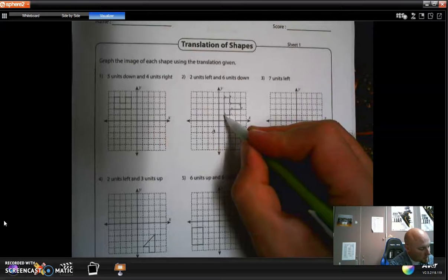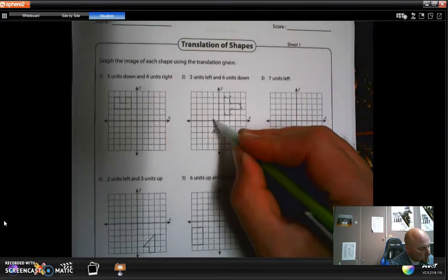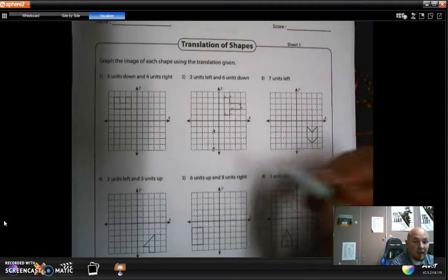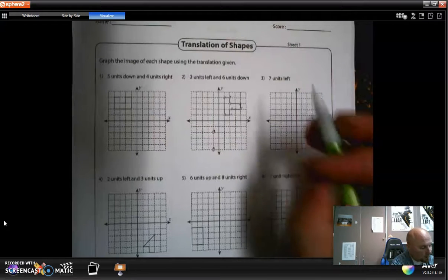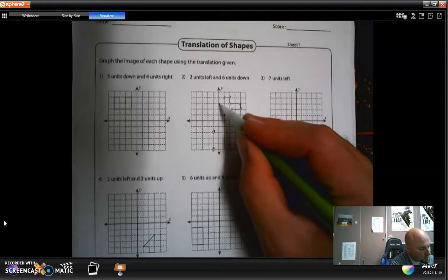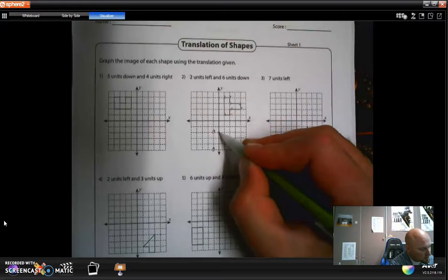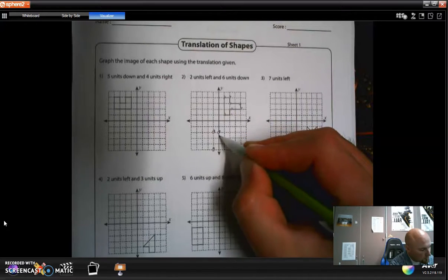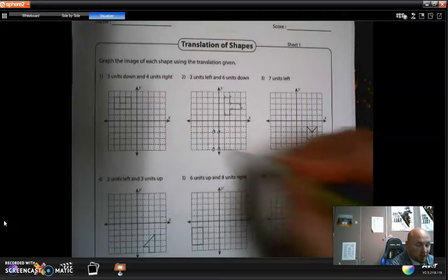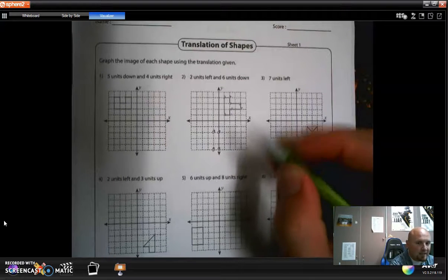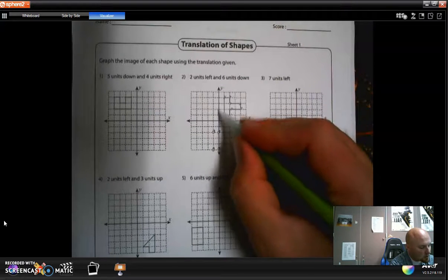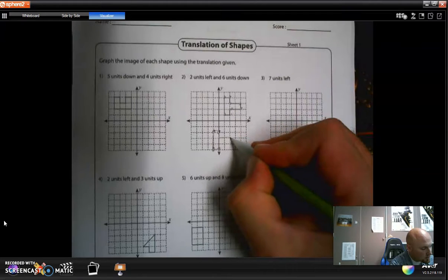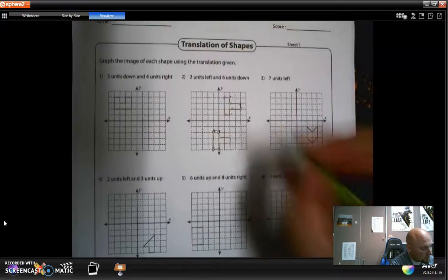Next one, two units left, one, two, six units down. One, two, three, four, five, six. I'm going to do that to every point and draw the shape. Two units left, one, two, six units down. One, two, three, four, five, six. You eventually get to the point where you can kind of see the shape and how it's going to look, and you can almost start filling it in. I know it's going to look something in this place. Now let me check it.